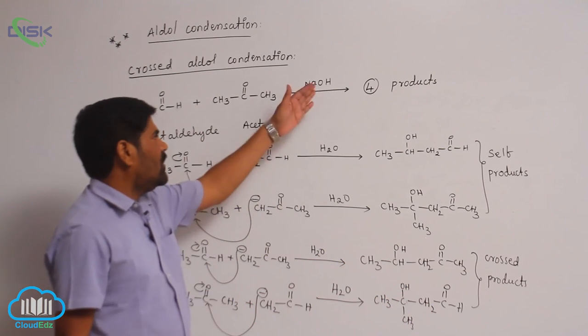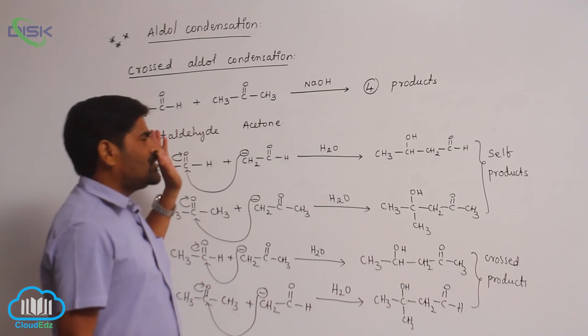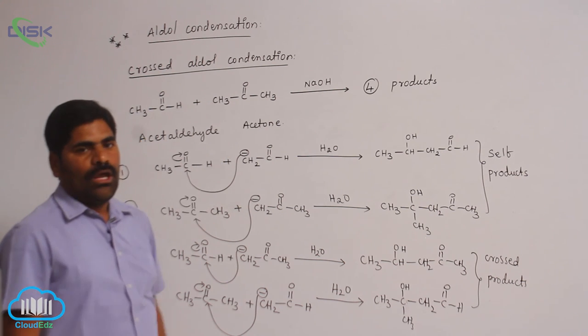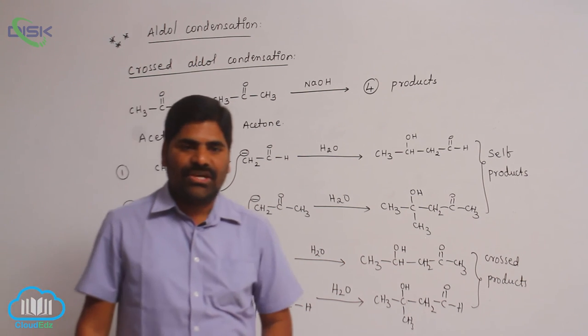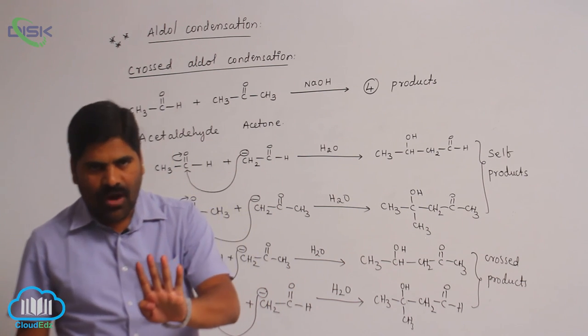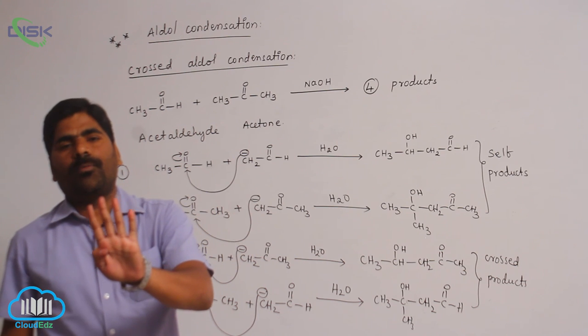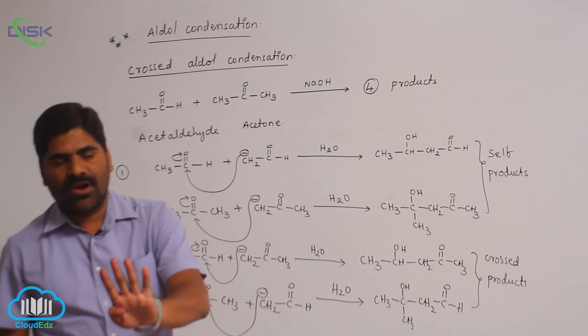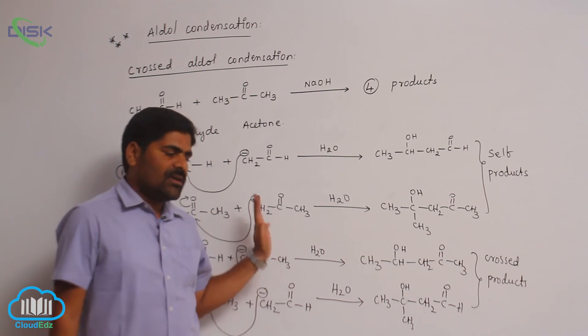That is the reason why, when using acetaldehyde and acetone together in aldol condensation, four products are formed in total: two self-products and two crossed products.